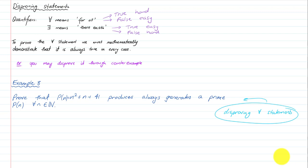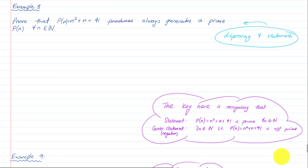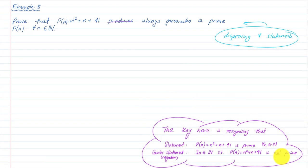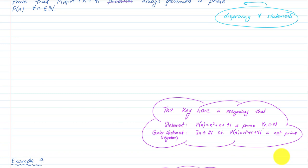First, we have disproving 'for all' statements — that's going to be with a counterexample. Example 8: prove or disprove that P(n) = n² + n + 41 always generates a prime for all n in the natural numbers. The key here is recognizing that this is a 'for all' statement, and therefore the counter-statement is: there exists a natural number such that P(n) is not prime. And I'm going to look for that.